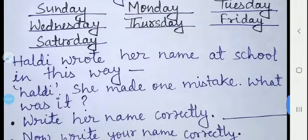The third question is: Haldi wrote her name at school. So what is her name? Haldi. Haldi is the name — H-A-L-D-I. She made one mistake. What was it? We have to correct this.